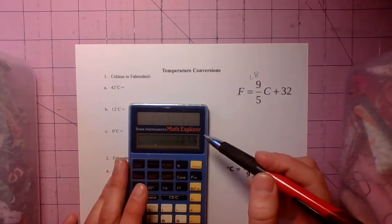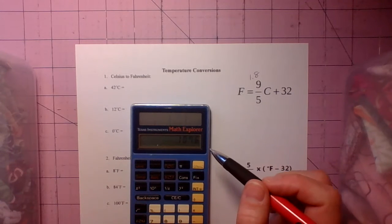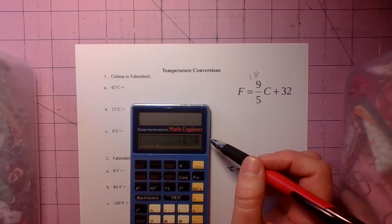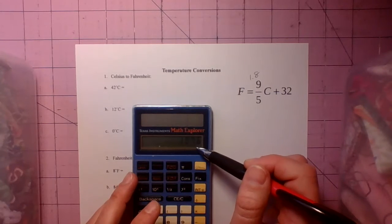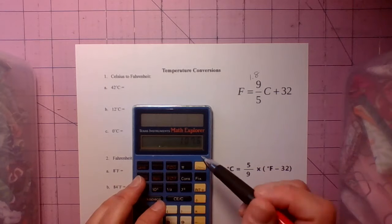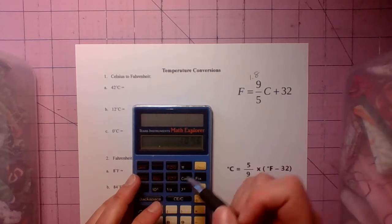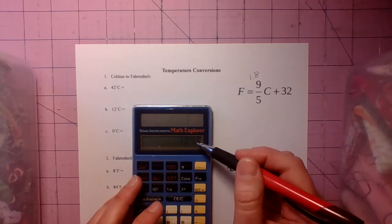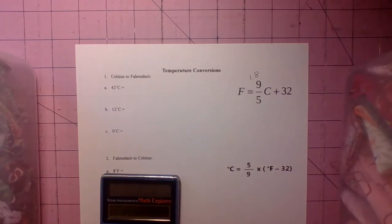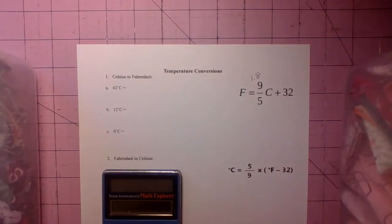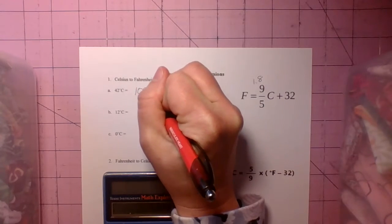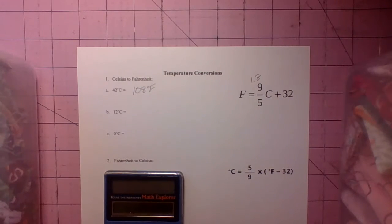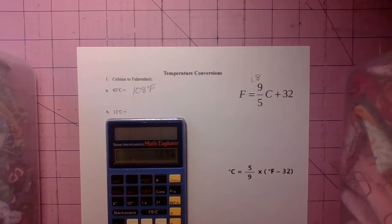Now temperatures I like to round them to the whole number. When you go to high school and college and you're taking physics class and chemistry classes they may want you to keep that decimal point, but to make it a little easier for middle school and completing the assignments we're going to round them to the whole number. So 42 degrees Celsius equals 108 degrees Fahrenheit because 107.6 rounds up to 108.